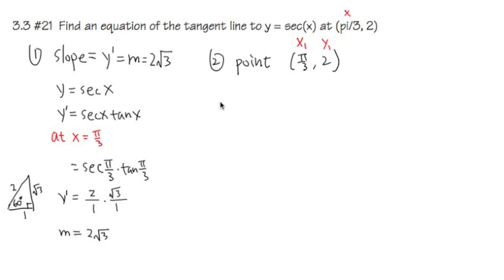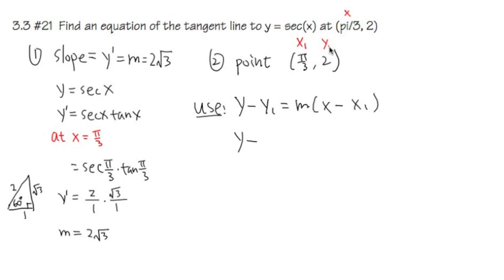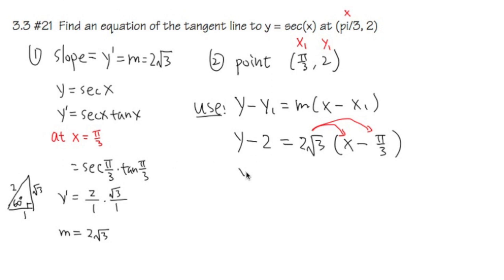I'm going to use the point-slope form for the equation of the line: y minus y₁ equals m times (x minus x₁). Plugging in all the values, I get y minus 2 equals 2√3 times (x minus π/3). I'm going to distribute the number in front of the parentheses and then isolate y. So y minus 2 equals 2√3·x minus 2√3·(π/3).